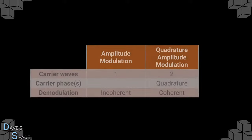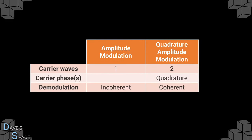To look at the differences between Amplitude Modulation and Quadrature Amplitude Modulation: for AM, we only have one carrier wave; for QAM, we have two, and the carrier phases must be in quadrature. The demodulation must be coherent for QAM, whereas there is no such restriction on regular Amplitude Modulation.